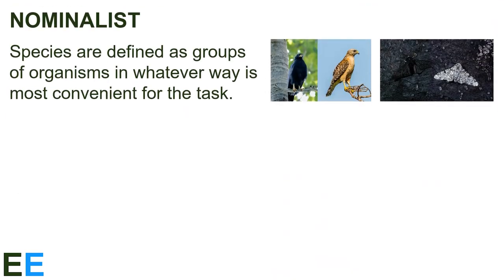The second species definition we'll look at is called the nominalist species definition. Here species are defined as groups of organisms in whatever way is most convenient for the task. Think about the hawk example we just looked at. Maybe color pattern is not that big a deal in some species, and the dark and light colors are just variation within the species. This kind of color pattern is common — it's seen in plenty of other organisms, like the peppered moth for example. On the other hand, maybe the people who study these hawks can see that there are lots of other differences between these two types of hawks. And if these groups rarely ever mate, then the hybrids are just weird special cases that obscure how distinct the two different species really are. Knowing which of these two scenarios is correct means knowing the details of how these organisms live. The decision about what is or is not enough to define a species means deferring to the experts, and we should leave it up to them to decide.